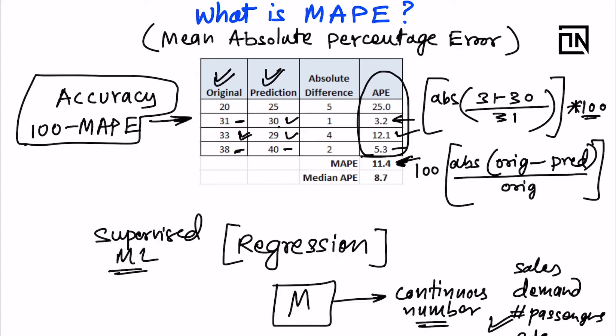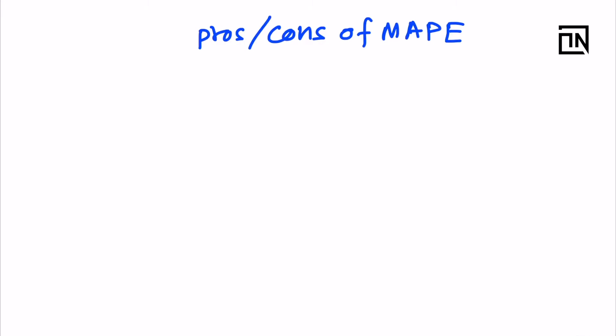Sometimes there is a trouble with MAPE, and this is when we utilize median APE. Let's discuss that trouble first. Sometimes the mean absolute percentage error can be really huge, and in those cases we also look at the median value. Now, the very straightforward pro of MAPE is that it is an easy-to-explain metric to clients — we use this to explain accuracy to clients.